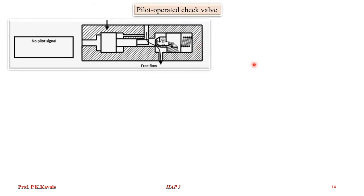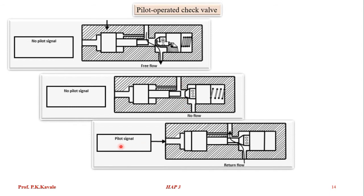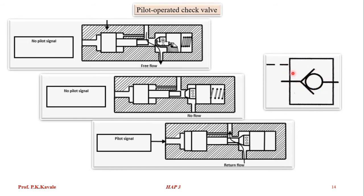The pilot-operated check valve: when there is no pilot signal, it acts as a normal check valve — allowing flow in only one direction (top to bottom). Reverse flow (bottom to top) is not allowed. But in special situations, when a pilot signal is given from a third-party source, the spool moves and opens the valve, making flow in the reverse direction possible. The symbol shows a normal check valve plus a pilot line.